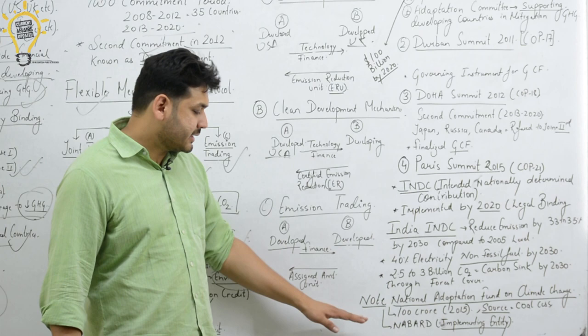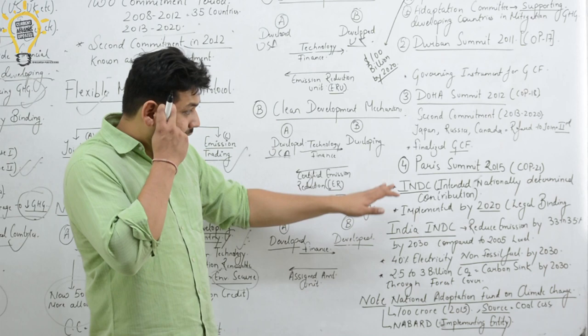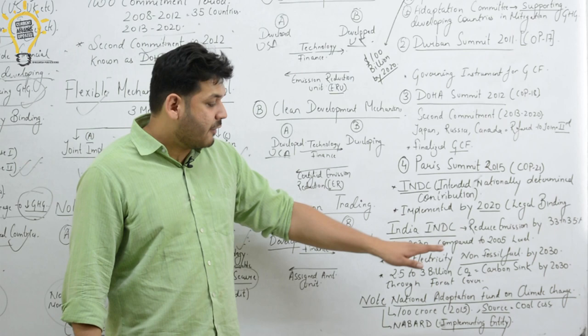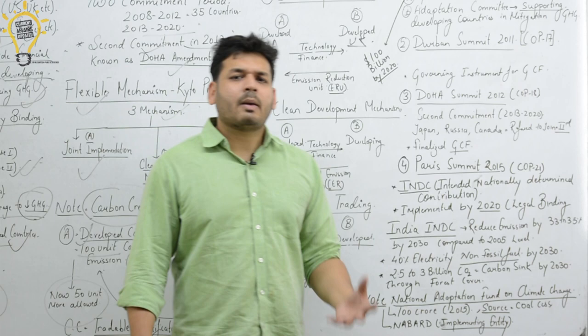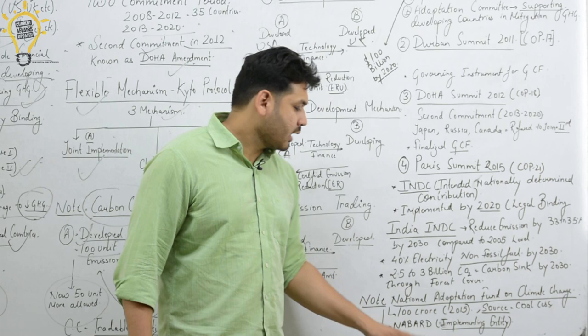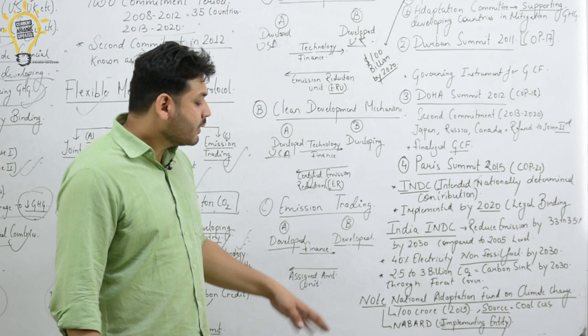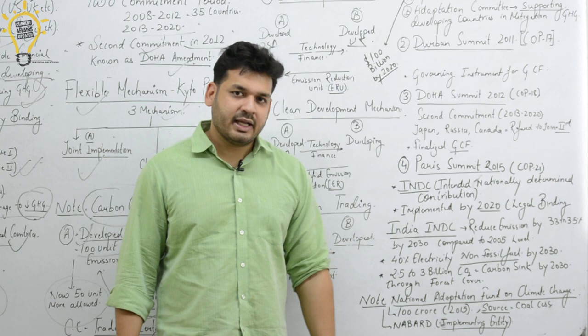A very important point: the National Adaptation Fund on Climate Change (NAFCC) was created in 2015 with a total corpus of 100 crore rupees, in view of the Paris Summit. The funds come from a cess/tax on coal extraction. This fund is for protecting against climate change. Importantly, NABARD is the implementing entity of the NAFCC — this is a frequently asked exam question.